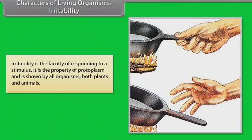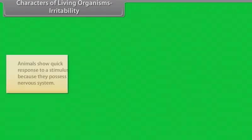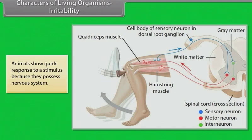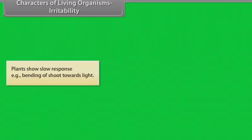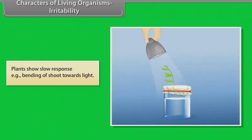Irritability is the faculty of responding to a stimulus. It is the property of protoplasm and is shown by all organisms, both plants and animals. Animals show quick response to a stimulus because they possess nervous system. Plants show slow response. Bending of shoot towards light.